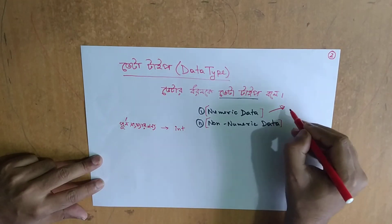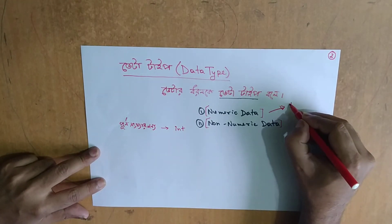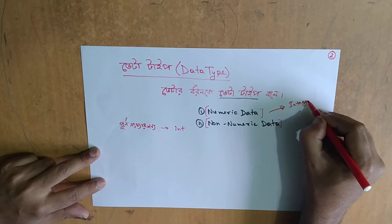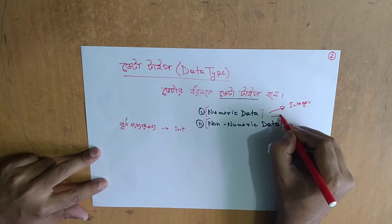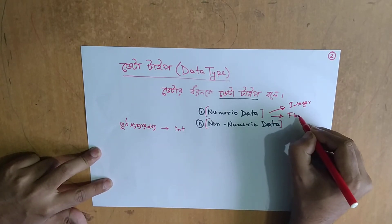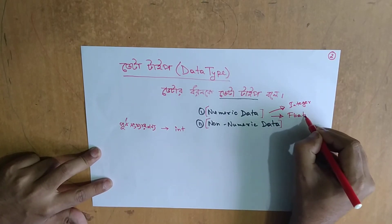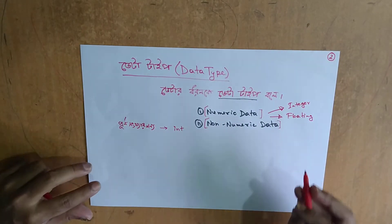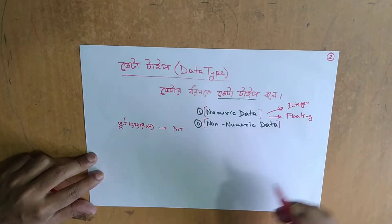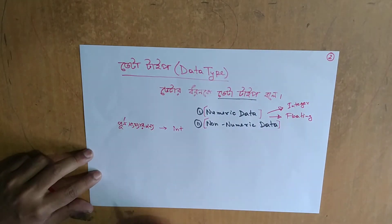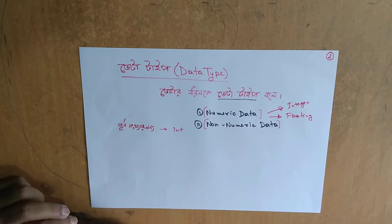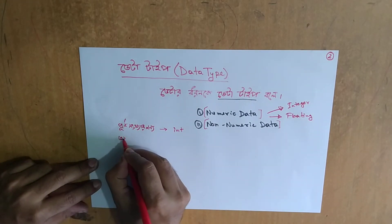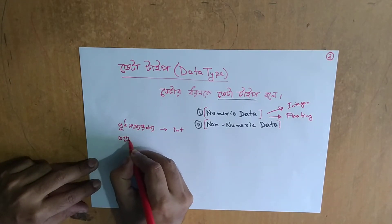It includes the integer. The entire data is floating. The entire data is full data — it includes the exact data. The entire data type is integer, and the exact query is the entire data.